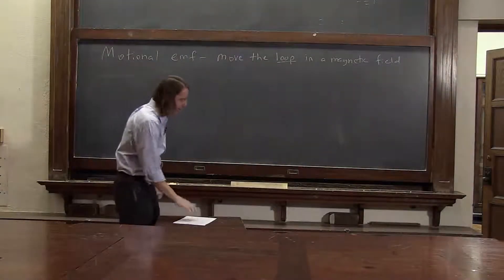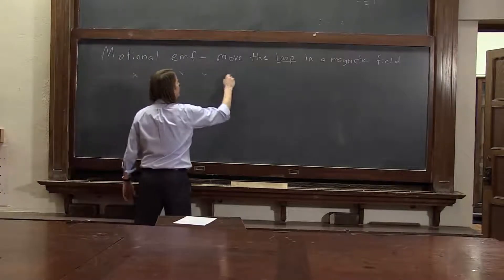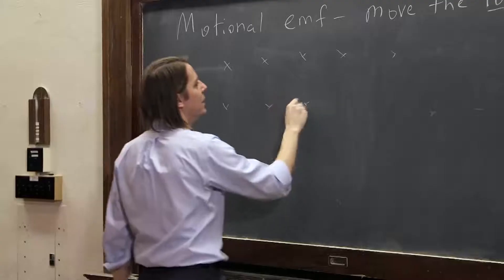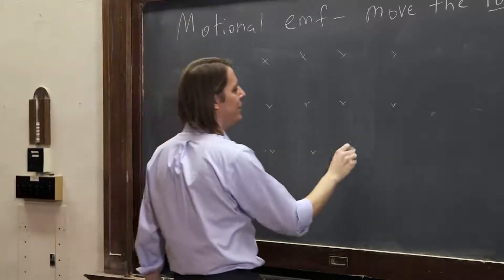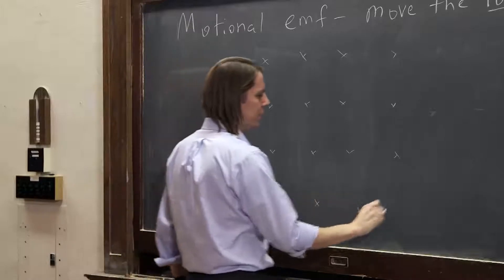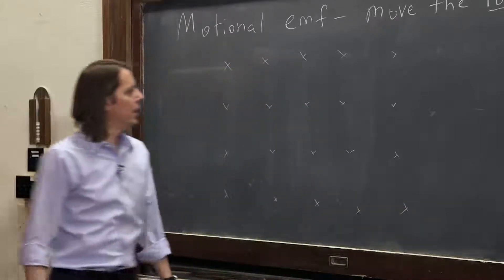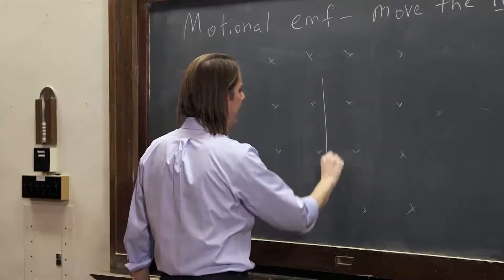OK. Now I remember. We've got to do this. Magnetic field into the board, a uniform magnetic field. We're not going to change that. We could make the field non-uniform, but then we would have to do vector calculus. We don't want to do that.